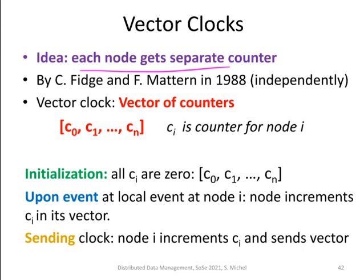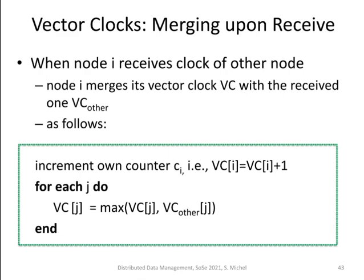In the beginning all counters are zero. When an event happens at node I, that node increments its own counter in the vector and attaches the vector to the event or object. When sending, you increment your counter first and then send the vector along. When receiving a vector from another node, you merge it with your own: first increment your own counter, then take the element-wise maximum across all entries of both vectors.